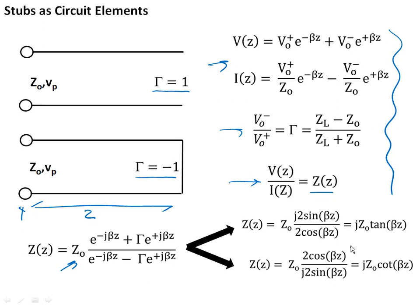In the case of the short-circuited stub, you come up with an equation that looks like this. In the case of an open-circuited stub, you come up with an equation that looks like this. And both of these are tangent equations.